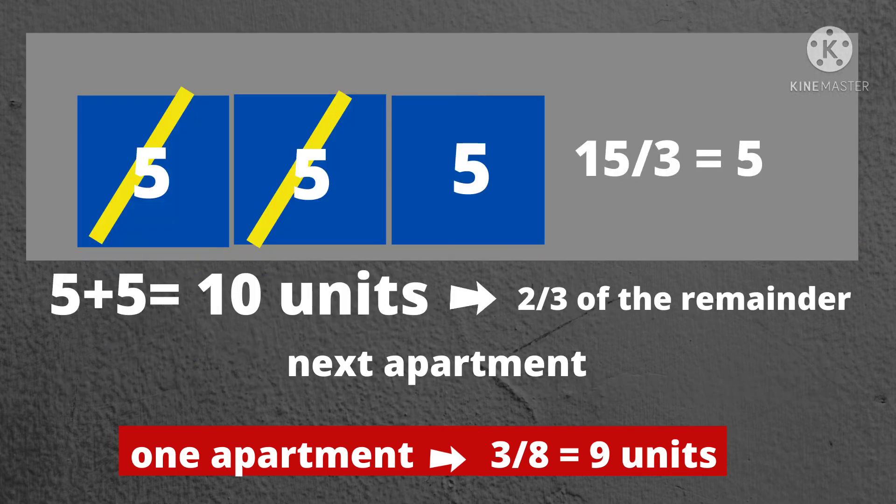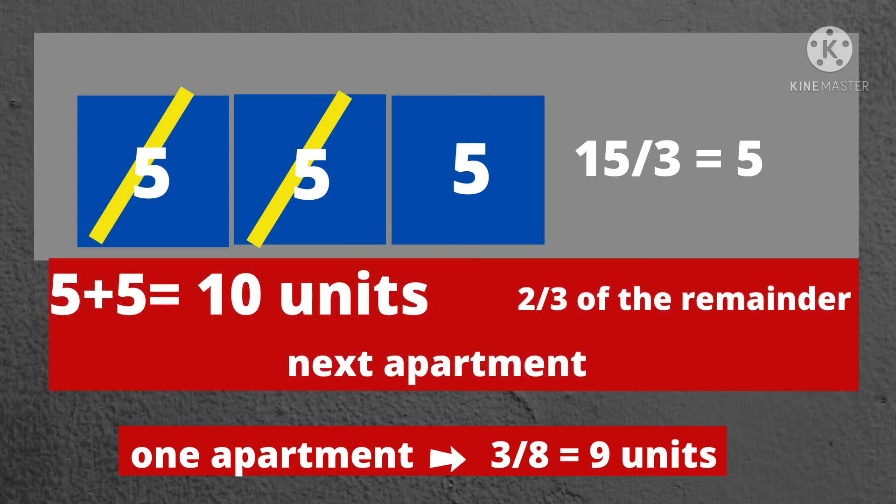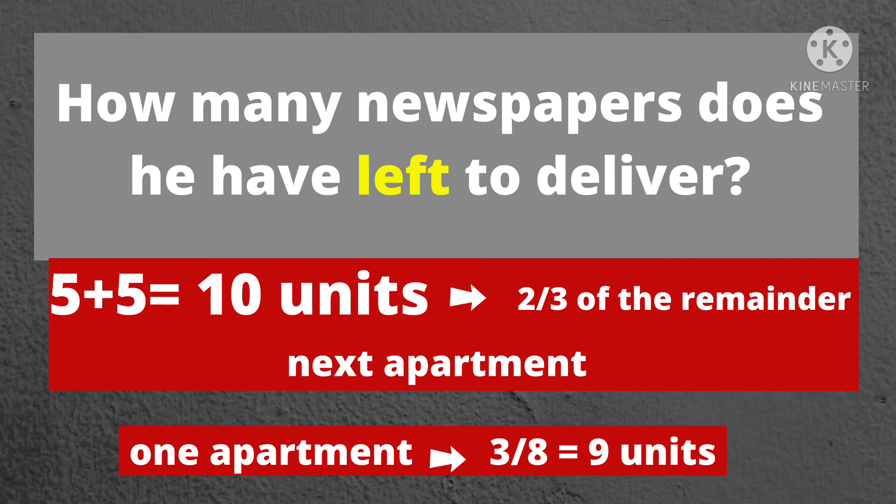We now highlight the two parts of 3. Let's add them. 5 plus 5 equals 10 units. 10 units is the two-thirds of the remainder.